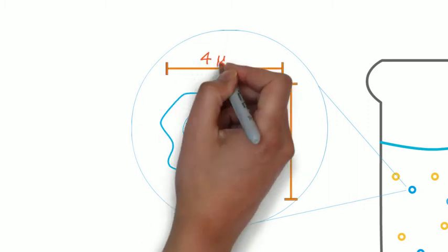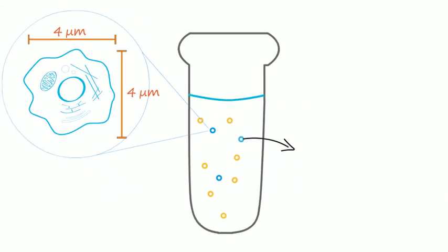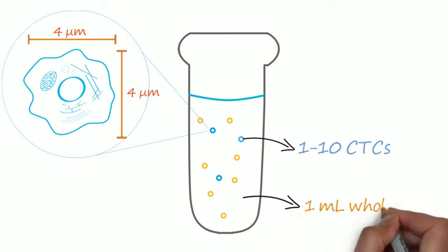These kind of cells are at least 4 micrometers by 4 micrometers. But the cells are rare. We can only find 1-10 CTCs out of 1 milliliter of whole blood.